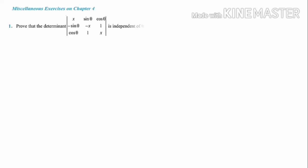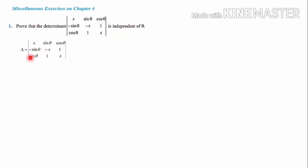Let's begin with the first question. The question is: prove that the determinant with elements x, sinθ, cosθ in row 1; -sinθ, -x, 1 in row 2; cosθ, 1, x in row 3 is independent of theta. Let's take the given determinant as delta.